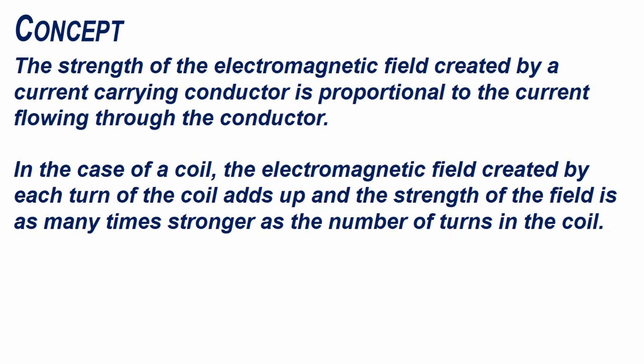The strength of the electromagnetic field created by a current carrying conductor is proportional to the current flowing through the conductor. In the case of a coil, the electromagnetic field created by each turn of the coil adds up and the strength of the field is as many times stronger as the number of turns in the coil.